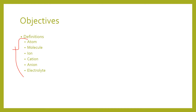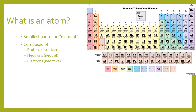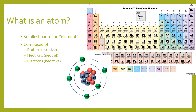An atom is the smallest part of an element. It's composed of three parts: protons, neutrons, and electrons. The protons and neutrons are in the nucleus of the atom, and the electrons float around in orbits. They have a negative charge. This is a carbon atom — it has six protons, and every element has a different number of protons, so you can identify the element by its proton count.